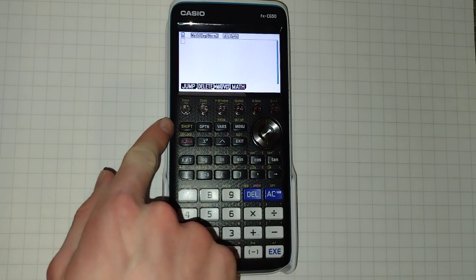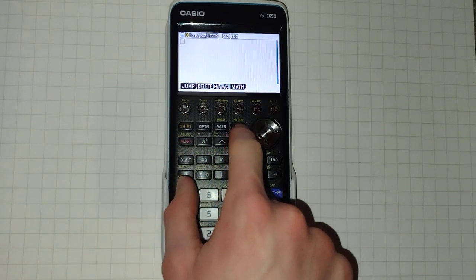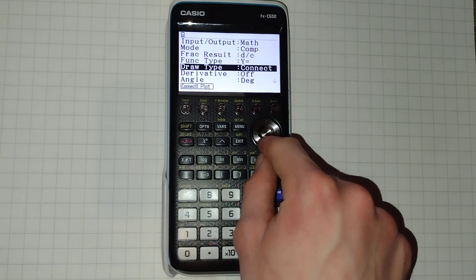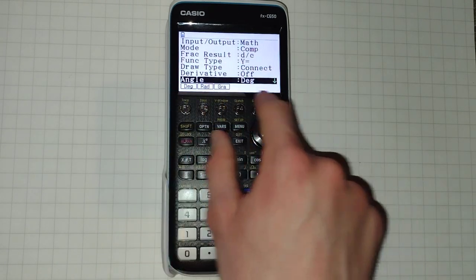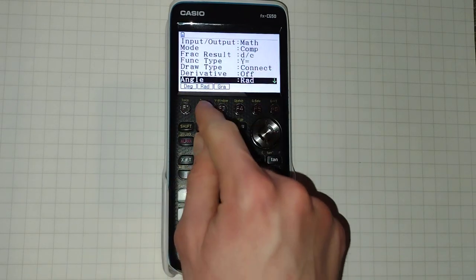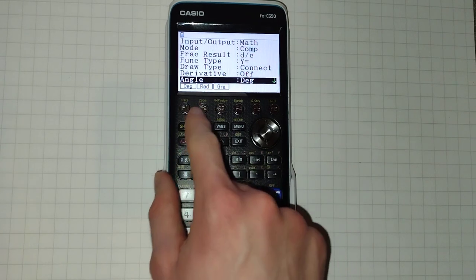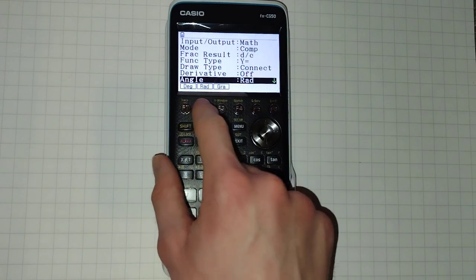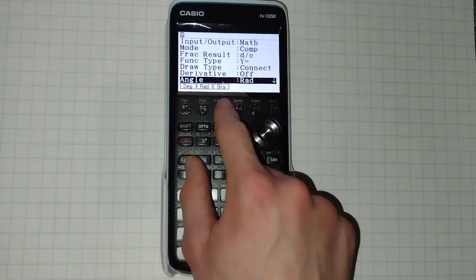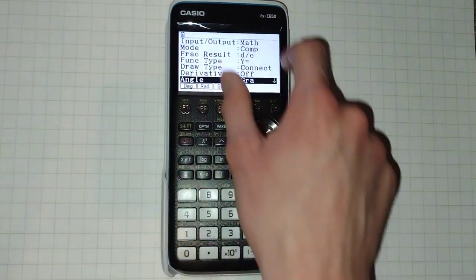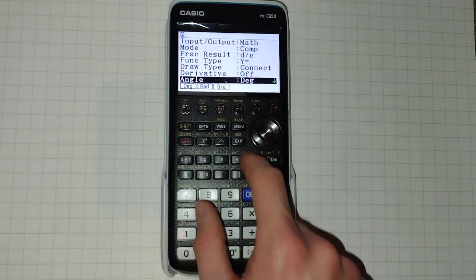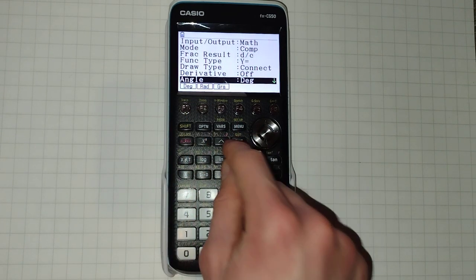To change your angle unit click shift and menu for setup and go downwards to here angle. Here you can switch between the different units. So degrees obviously 360 degrees in a turn, radians 2pi in a turn and gradians 400 in a turn. And you can set which one you want to work with. Here I'll pick degrees as I was already in. And then you click exit.